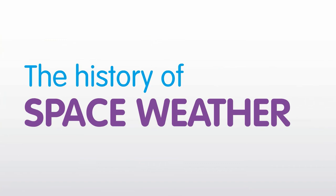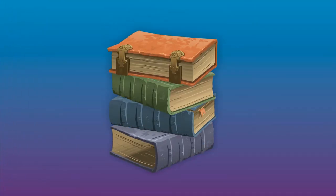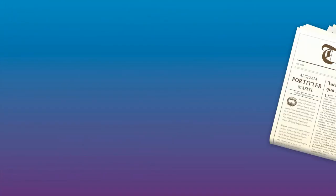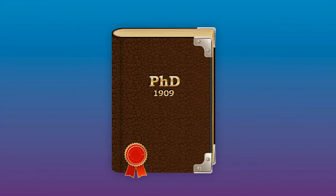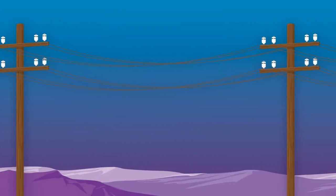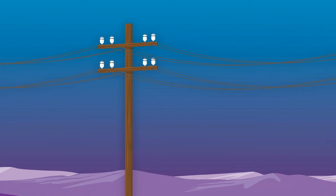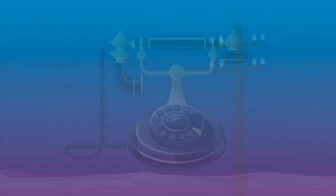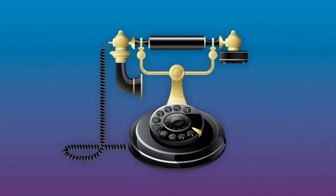Space weather isn't new to us. There are a number of historical records, including Victorian newspaper articles and a PhD thesis about a magnetic storm in 1909. These records show disruptions to telegraph systems and telephone lines. Back then, space weather was a source of interest, but it caused little damage.